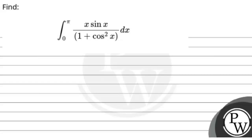Hello guys, let's read this question. The question says: find the integral from 0 to π of x·sin x divided by (1 + cos²x) dx.